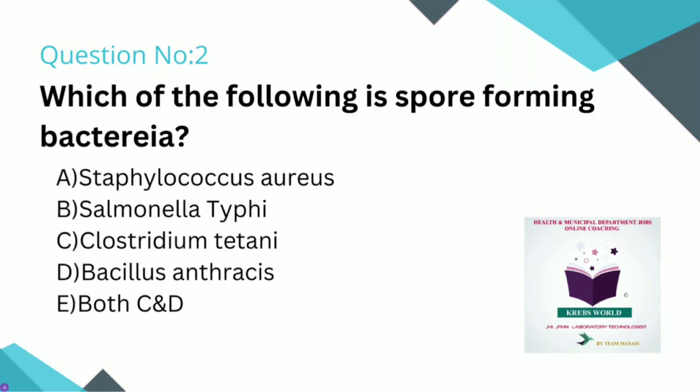Both Clostridium tetani and Bacillus anthracis are spore-bearing organisms. So the right answer is Option E — Both C and D.